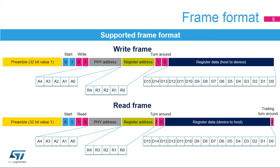Then, the MDIO slave device address and register address are sent. Up to 32 device registers can be addressed. Subsequently, for a write frame, the host sends a 2-bit turnaround code, 1-0, followed by the 16-bit register data. When the host issues a read command, it changes the MDIO direction to input in the first turnaround cycle, and the slave device drives the MDIO in the second cycle to 0. The slave outputs the data on the rising edge of the MDC clock signal. Following the second turnaround bit, the slave device sends the register data, and when finished, in the trailing turnaround period, it changes the MDIO direction to input again.